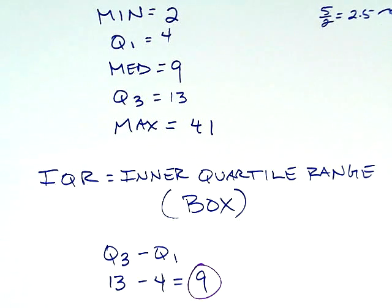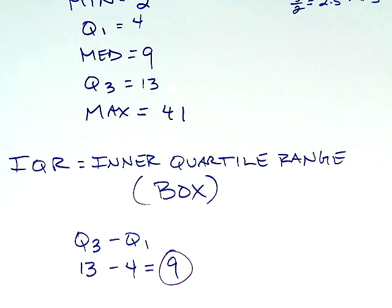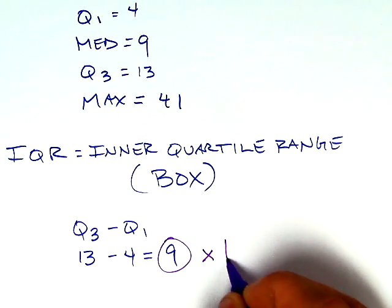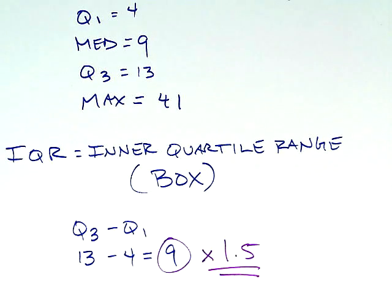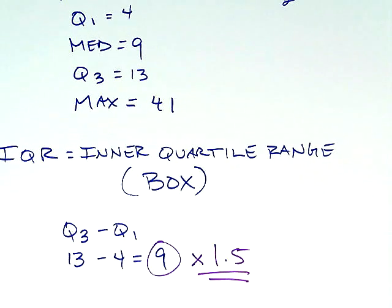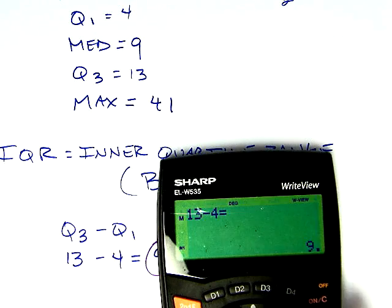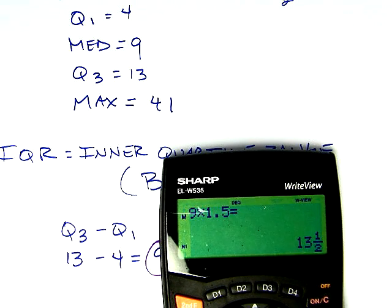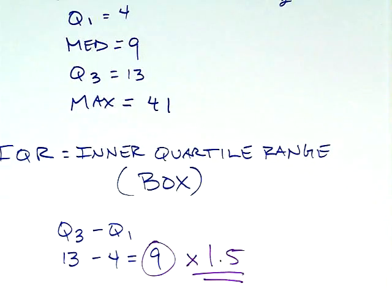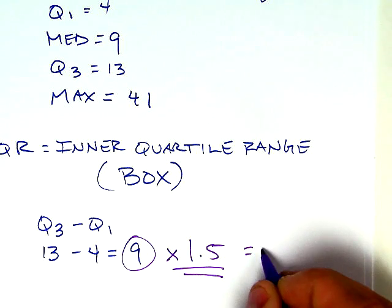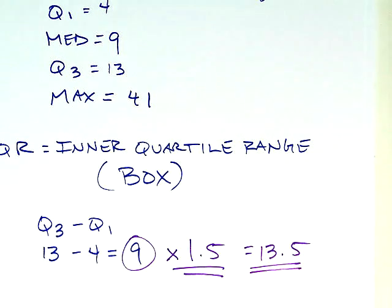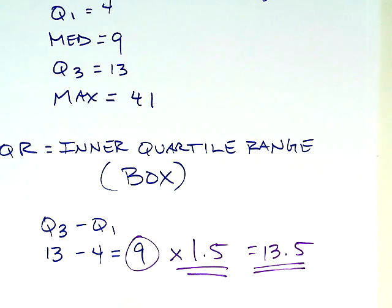That's the length of the box, but with the IQR and the outlier test there's another step. We have this magical number—we need to multiply by 1.5. So we need to take the number 9 and multiply by 1.5. I get 13 and a half, or 13.5.